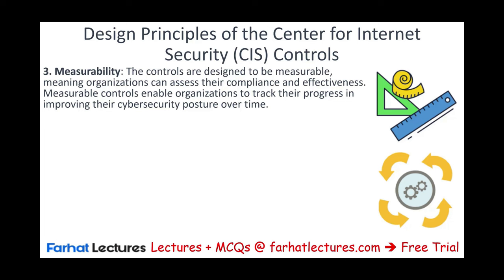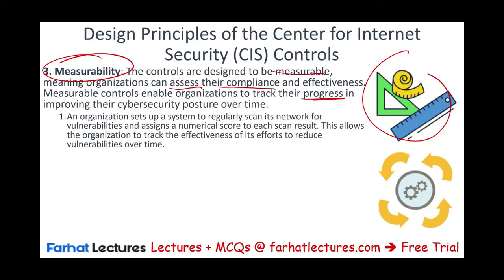A third principle is measurability — being able to measure something. The controls are designed to be measurable so you can assess compliance and effectiveness. For example, measurable controls enable organizations to track their progress in improving their cybersecurity posture over time. An organization sets up a system to scan the network regularly for vulnerabilities and assigns a numerical score to each scan result, tracking reductions over time.